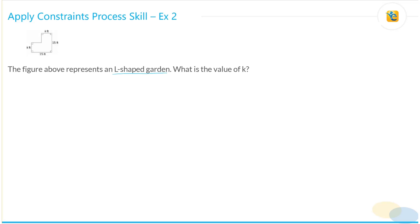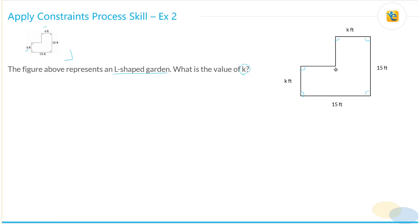The figure above represents an L-shaped garden. What is the value of K? So we need to figure out the value of this dimension K. All the angles here are 90 degrees, which means this L-shaped garden is composed of two rectangles — one is this pink rectangle, the longer rectangle, and the other is this green rectangle. You've been given the long edges, and the smaller edges are K feet. So now we need to find the value of K.